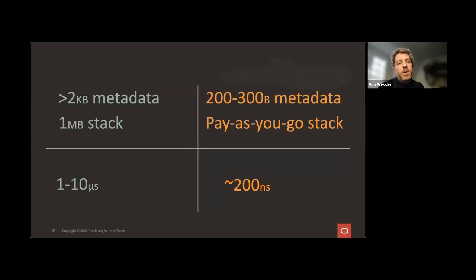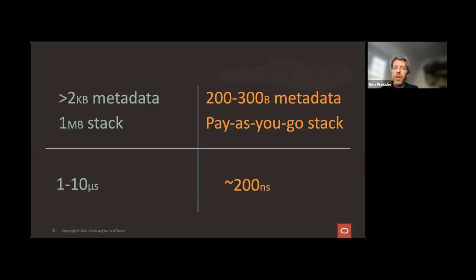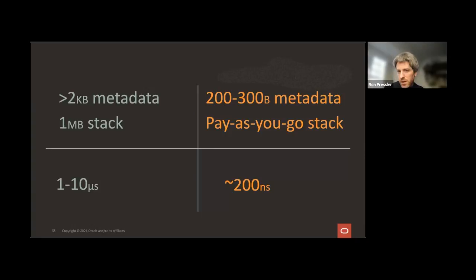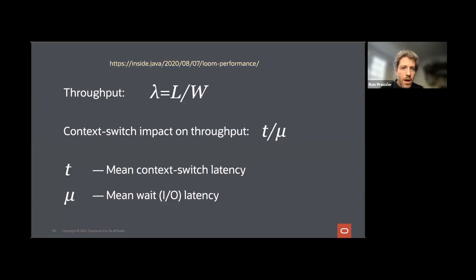Today, a Java.lang.Thread has about two kilobytes of metadata, stacks are one megabyte by default, and task switching can be more than one microsecond. With virtual threads, the metadata is just a couple hundred bytes, the stack grows and shrinks depending on what you use, and context switching is about 200 nanoseconds — although that's not actually the most important metric.